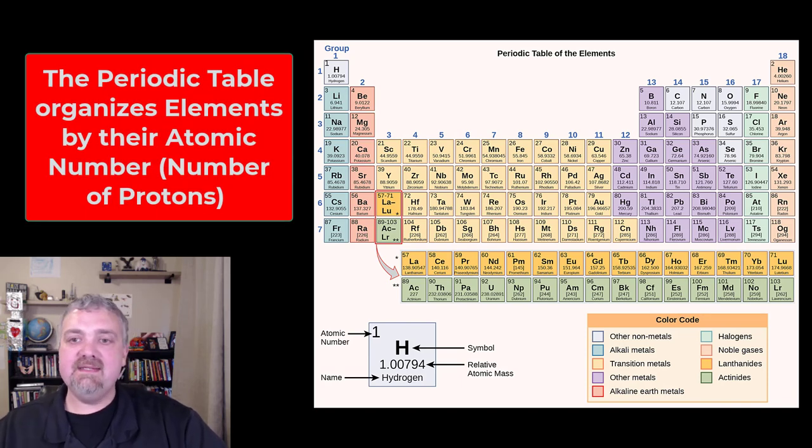Hey, everybody. Dr. O here. Let's talk about the periodic table of the elements. So the periodic table is a chart that has all 92 elements that are found in nature plus a bunch of other elements that have been discovered experimentally.